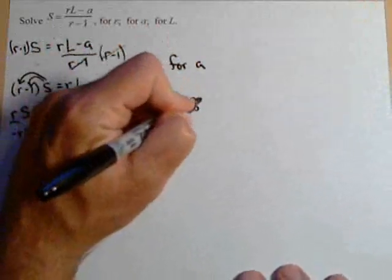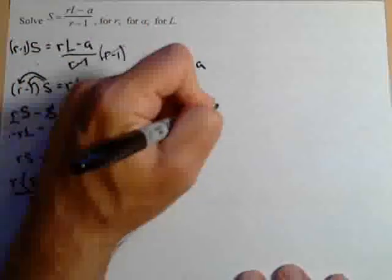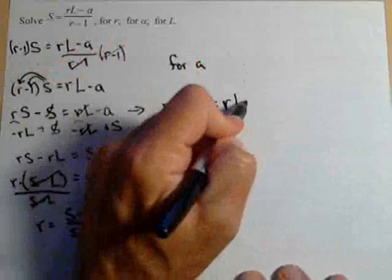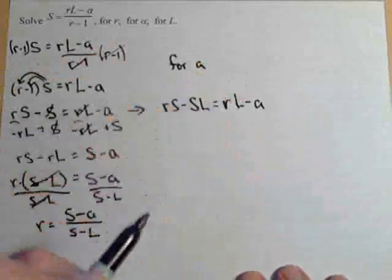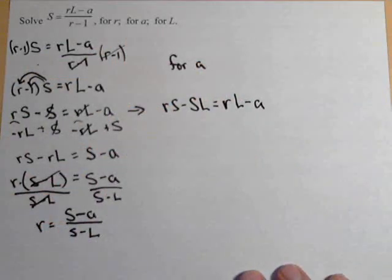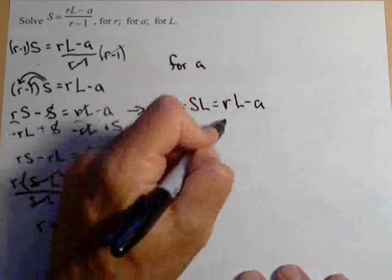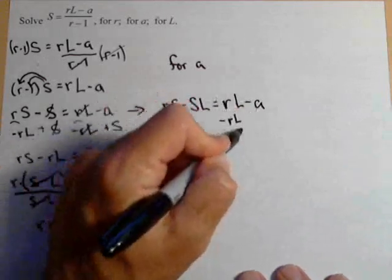RS minus S equals RL minus A. So our goal is to solve for A. We need A on a side by itself. We've almost got it. So if we subtract the RL from both sides, let's cancel. Subtract RL over here.